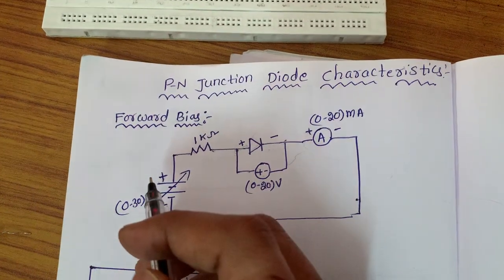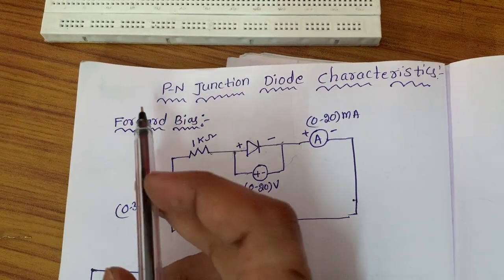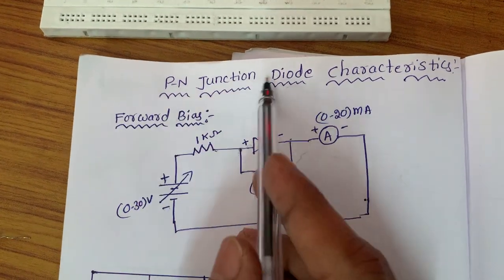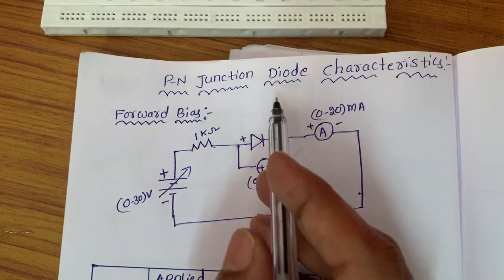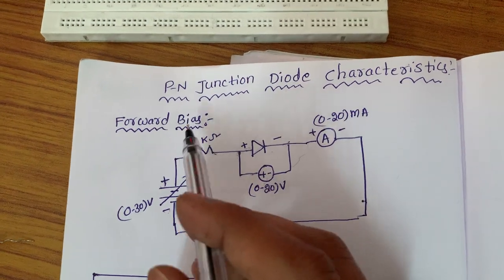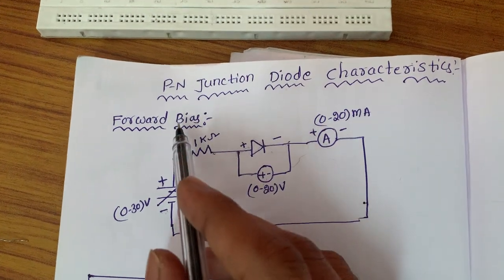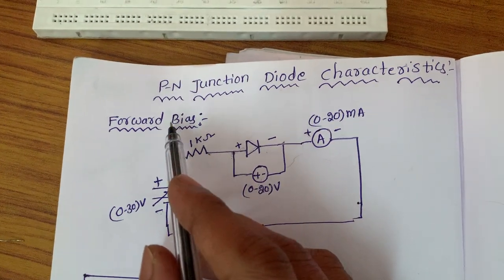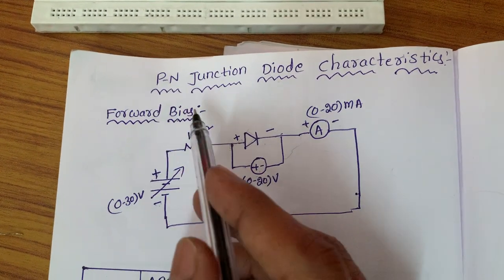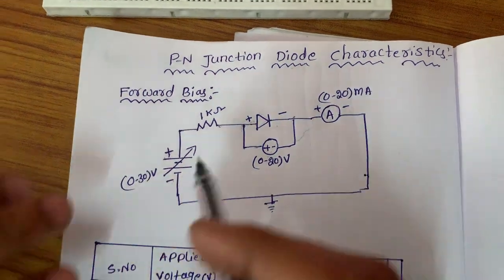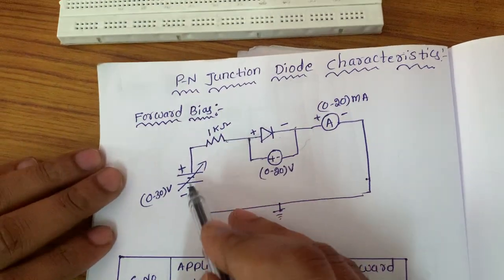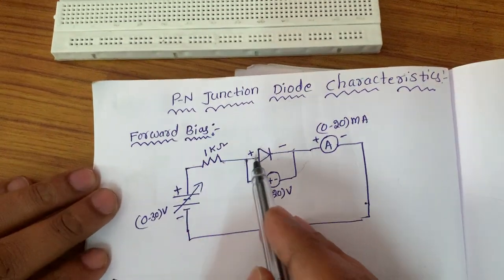Hello everyone. Today we are going to conduct the PN junction diode characteristics experiment. In this, we are going to observe the forward bias characteristics as well as the reverse bias characteristics. This is the circuit diagram of forward bias.